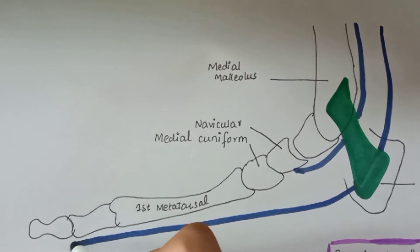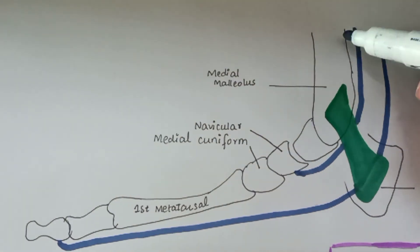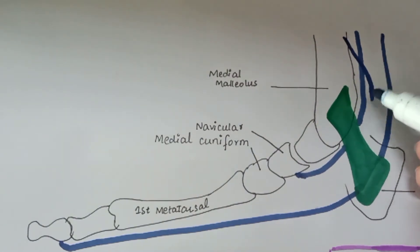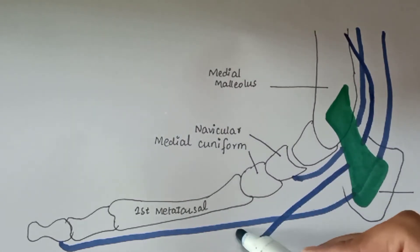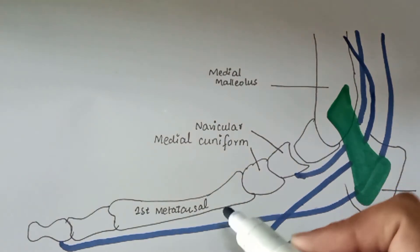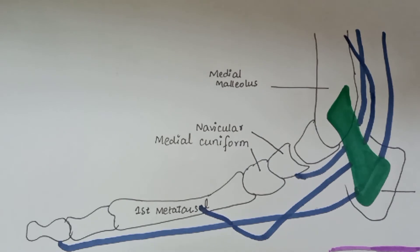The flexor hallucis longus tendon gets inserted at the base of the distal phalanx of the big toe. Next is the tendon of flexor digitorum longus, which first crosses the tendon of tibialis posterior, then goes underneath the tendon of flexor hallucis longus, and gets inserted into the base of the distal phalanges. These are the three tendons.